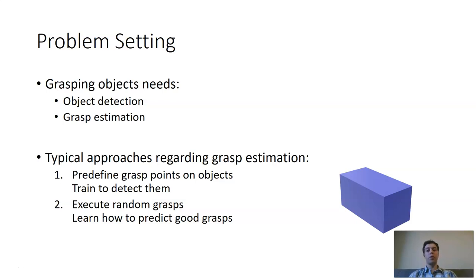Some of the typical approaches regarding grasp estimation is to use a table containing all information about the object models, depending on the predefined grasp points on the objects. During the execution of grasps, the robot will just try to detect the objects and then look up in the table how and where to grasp the objects. Another potential algorithm is to execute random grasps and learn what is a good grasp, and then tell the user later on what a good grasp is for any object.